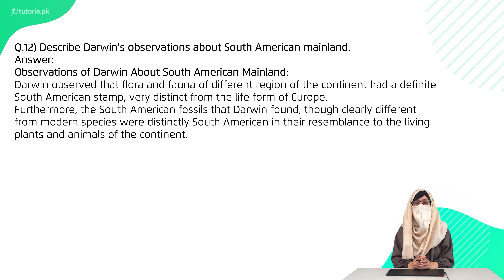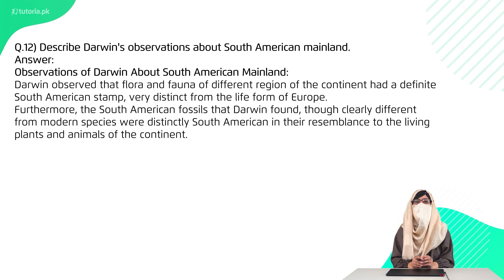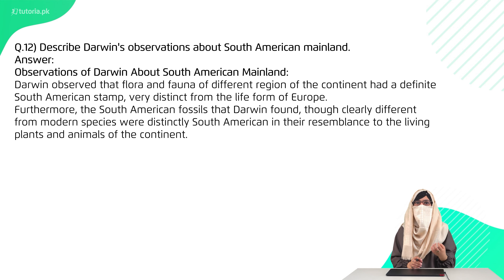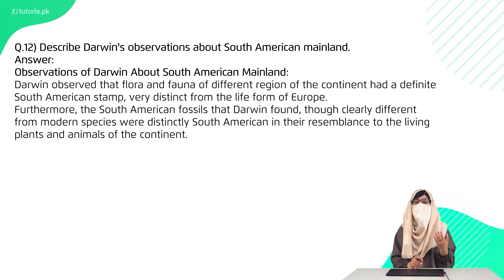Question 12 is: describe Darwin's observation about South American mainland. One observation was that whatever organisms were present, they all had a similar South American character. Because they survive in the same environment, comparative analogy is applied — although organisms are genetically different, due to the same environment, some characters are similar and different from organisms on other continents.